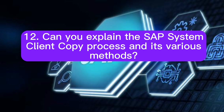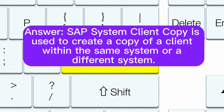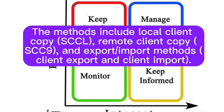Question 12: Can you explain the SAP system client copy process and its various methods? SAP system client copy is used to create a copy of a client within the same system or a different system. The methods include local client copy (SCCL), remote client copy (SCC9), and export/import methods (client export and client import).